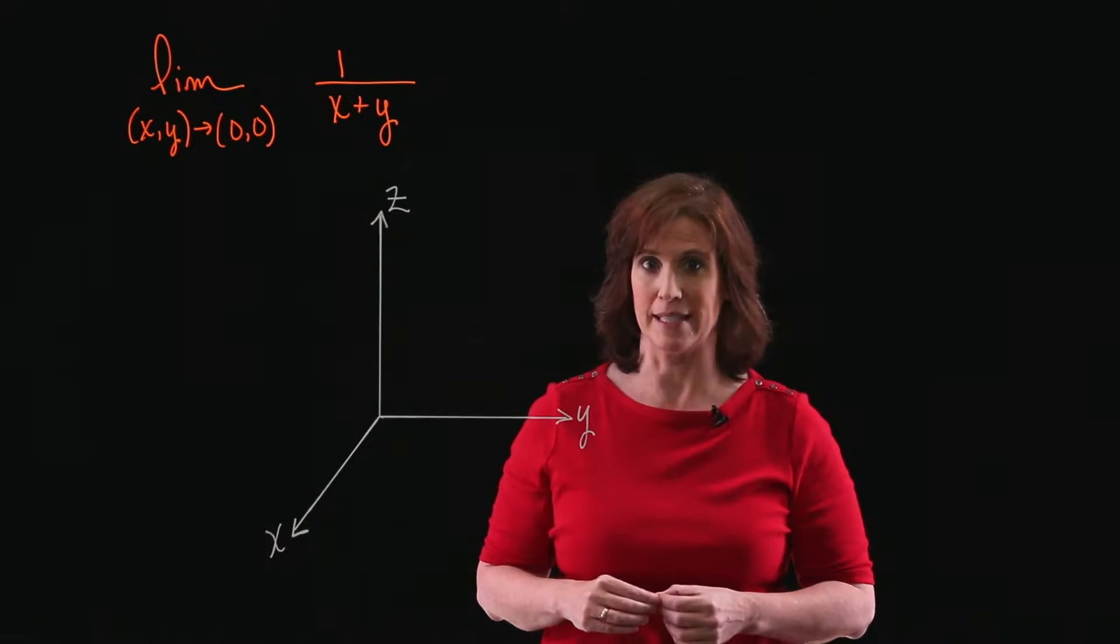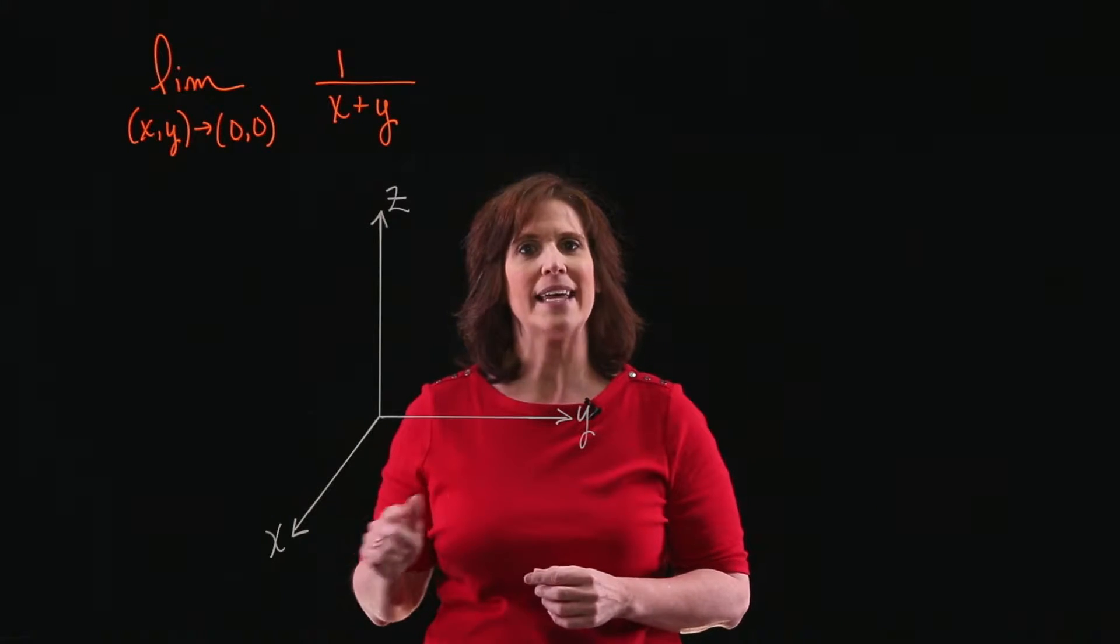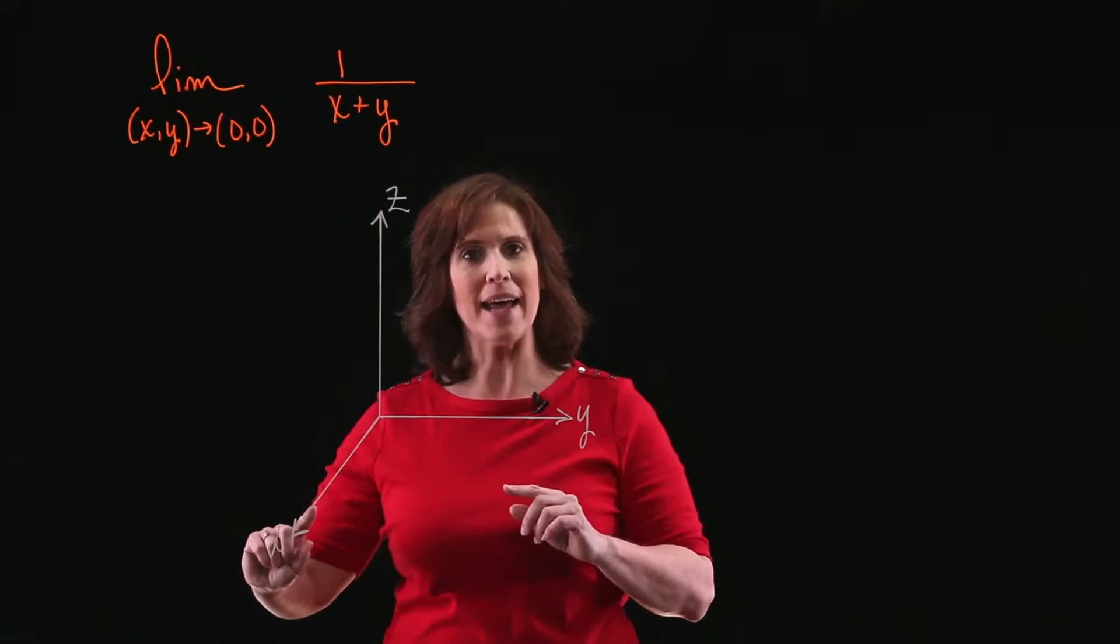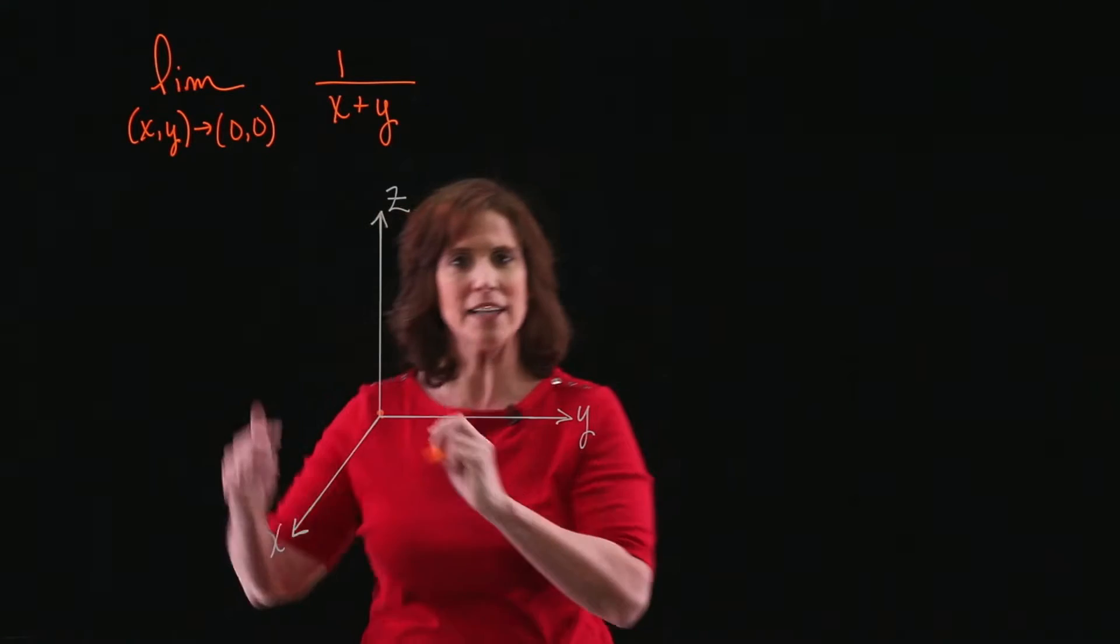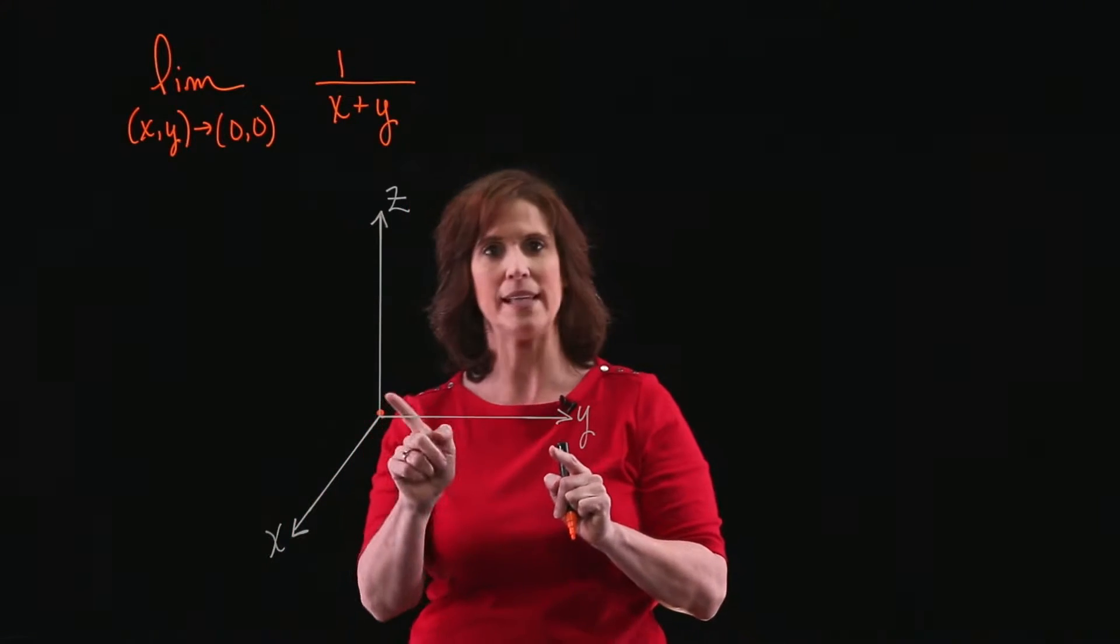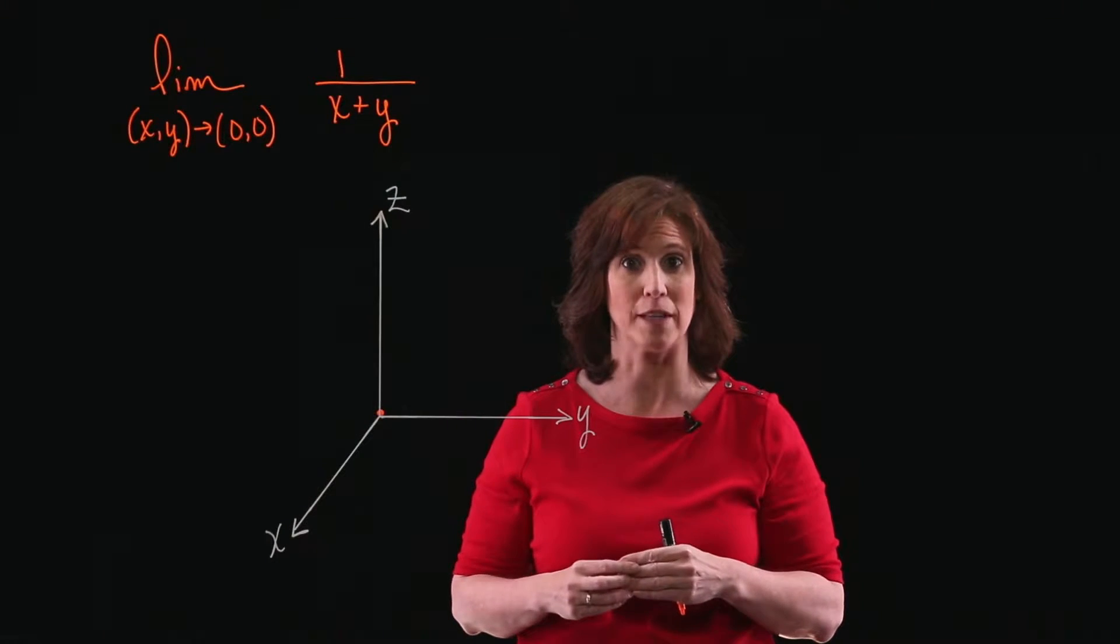That doesn't mean the limit doesn't exist. So what I want to find out is what happens as I get really close to (0, 0). Now, as I approach (0, 0), I can approach this point from lots of different angles. So I could be coming from this way, across here, from this angle, and they all have to be approaching the same value in order for the limit to exist.